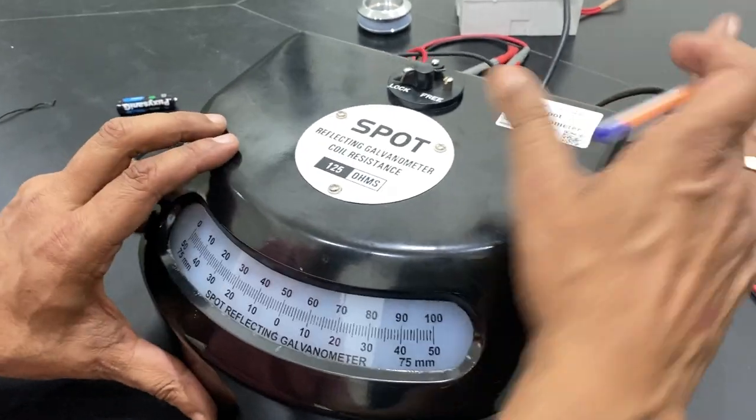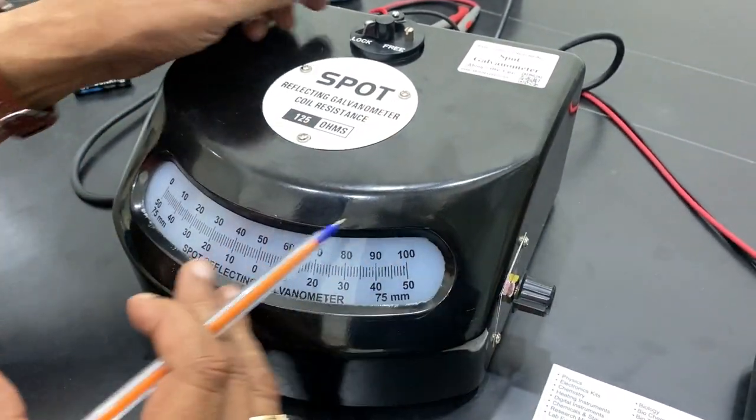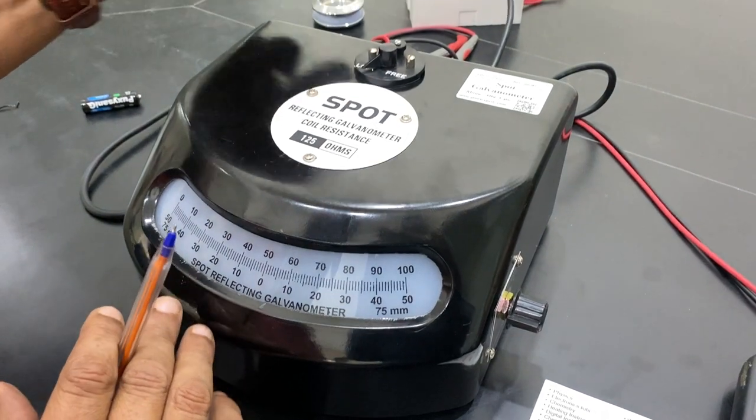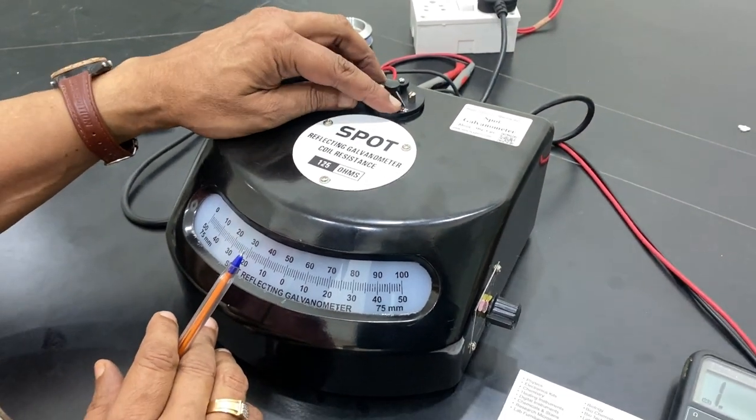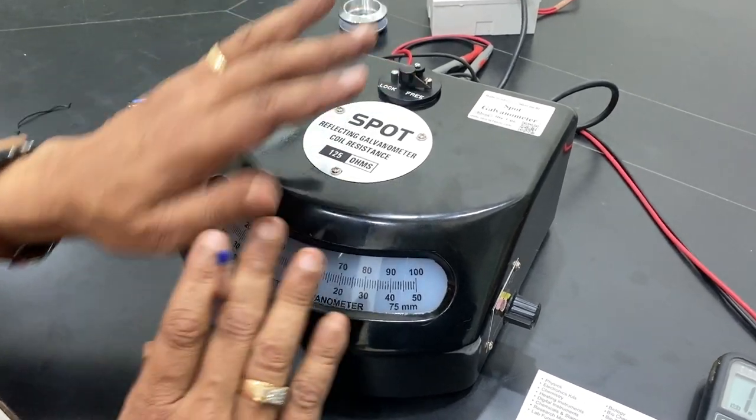First of all, the instrument comes to you in a packing. Open it and then this may be a lock, the rubber band may be there or this may be on this side. When you put it on the free side, then it is usable.